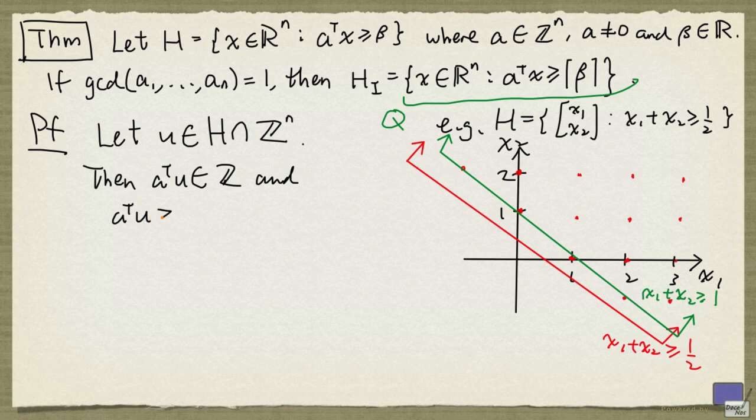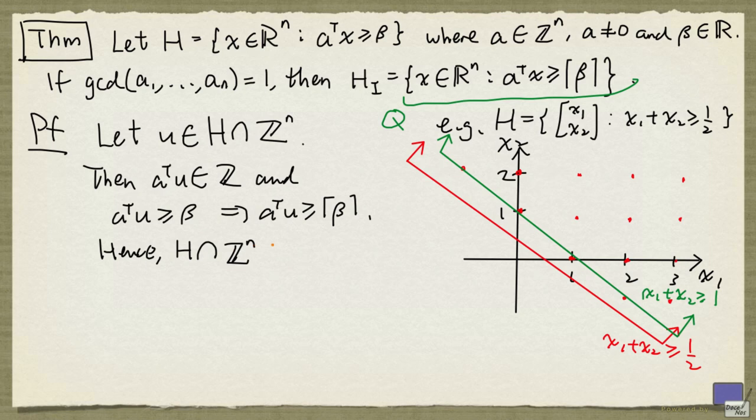Suppose that u is an integral point in H. Then a^T u must be an integer. But since u is in H, a^T u is at least β. So a^T u is an integer at least β. That means a^T u has to be at least the least integer at least β.